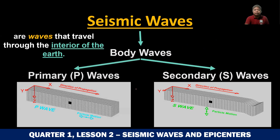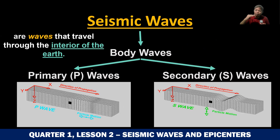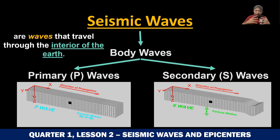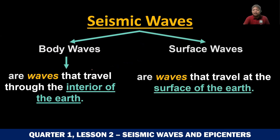Now let us talk about surface waves. Remember, body waves are waves that travel through the interior of the Earth — doon sa ilalim ng lupa. Once these waves reach the ground — yung surface kung saan tayo nakatira — seismic waves start from the breakage of rocks sa ilalim ng lupa, release body waves first, and when they reach the surface, ang tawag na sa kanila ay surface waves — waves that travel at the surface of the Earth.